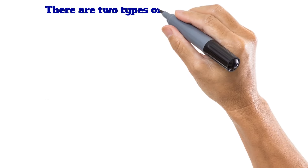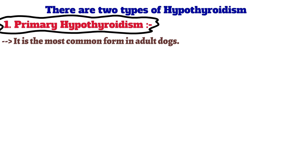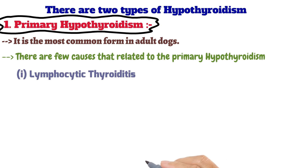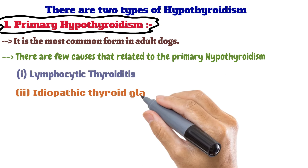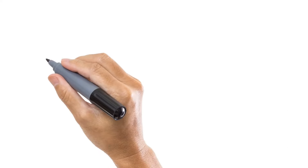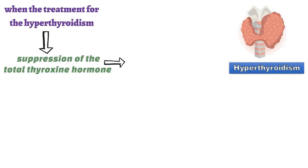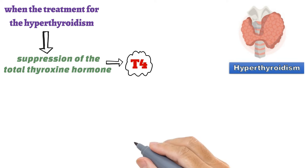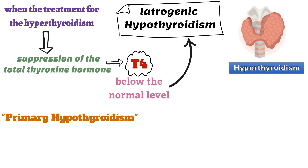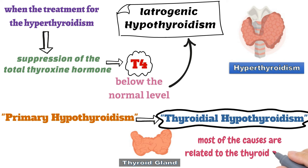There are two types of hypothyroidism. The first is primary hypothyroidism, the most common form in adult dogs. Its causes include lymphocytic thyroiditis, idiopathic thyroid atrophy, thyroid neoplasia, and iatrogenic hypothyroidism — where treatment for hyperthyroidism suppresses total thyroxine (T4) below normal levels. Primary hypothyroidism is also known as thyroidal hypothyroidism because most causes relate directly to the thyroid gland.